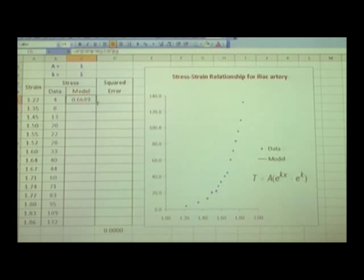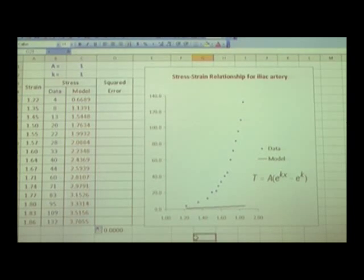And then what I can do is I'm going to copy this down, and you'll find that at the moment, my model is very bad. It's like that, whereas the data is like that. So obviously, I need to make some changes to the values of a and k, this empirical modeling.